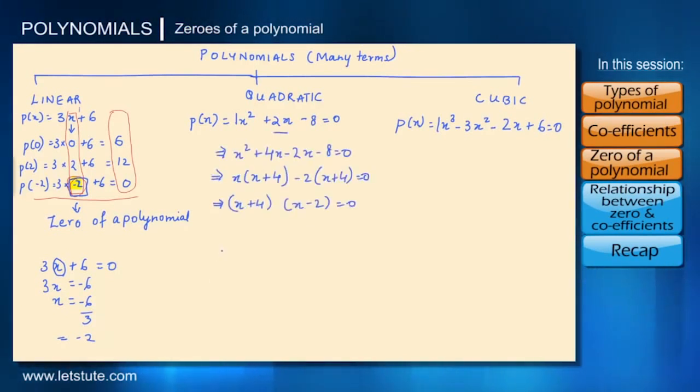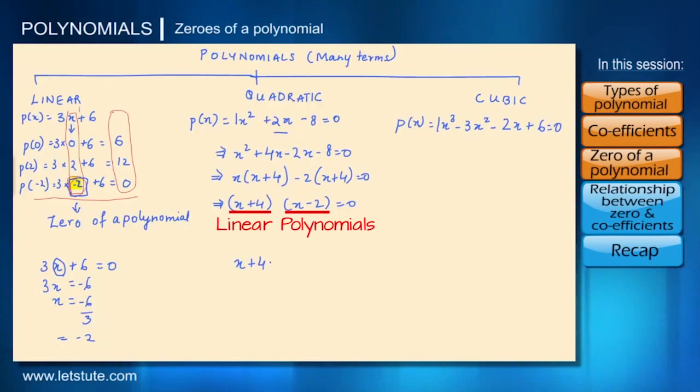So actually what we've done is we've got this in terms of linear polynomials. Now these are two linear polynomials x plus 4 is equal to 0 or x minus 2 is equal to 0. So therefore x is equal to minus 4 or x is equal to plus 2.